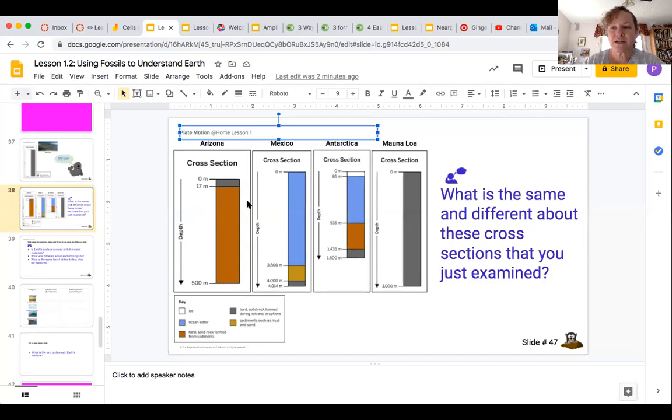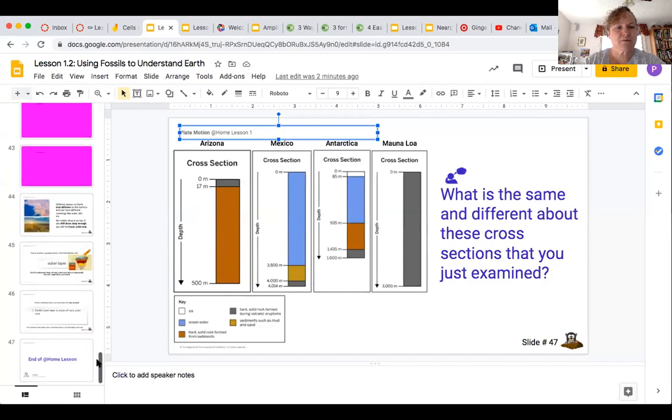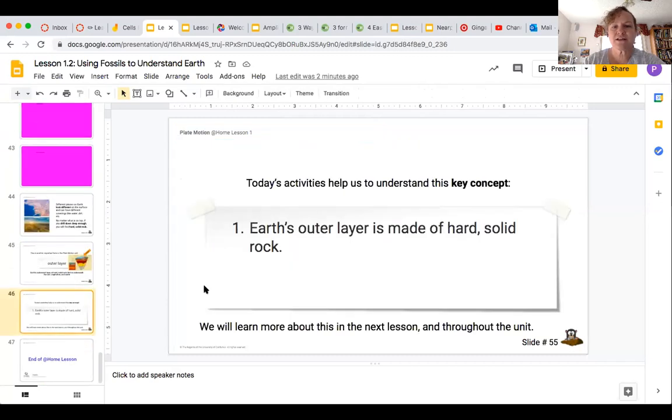And no matter where the scientists drilled, as long as they drilled far enough down, ultimately they came to hard solid rock. So that's one really important key concept that we learned last week is that earth's outer layer is made of hard solid rock.